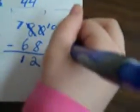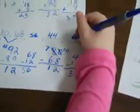Now, I do 44 minus 12. 4 minus 2 is 2. And 4 minus 1 is 3. So, our third number is 32.